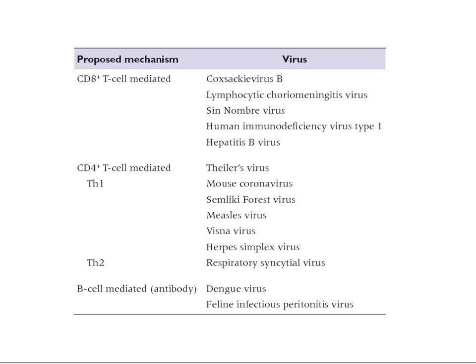These are examples of immunopathology caused by different immune responses. CD8 T-cell mediated immune responses — CTLs meant to lyse infected cells — cause tissue damage. CD4 T-cells, both Th1 and Th2 types, can also cause immunopathology. Finally, antibodies can cause tissue pathology as well.